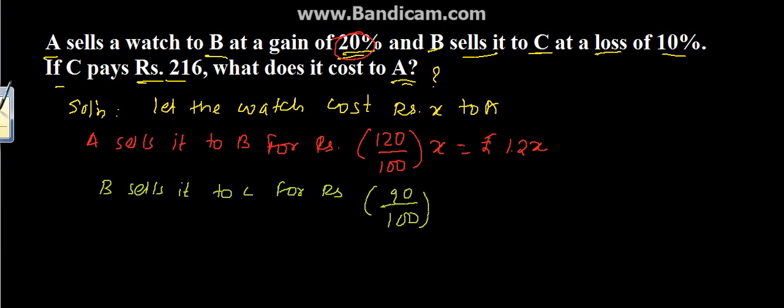90 upon 100 because 100 minus 10, 10 is the loss percentage, into 1.2X. Now here we have taken X, but here we have taken 1.2X because after selling it to B, the cost has become 1.2X. Before it was X because we had considered the cost for A as X. Now after selling it to B, the cost price for B has become 1.2X.